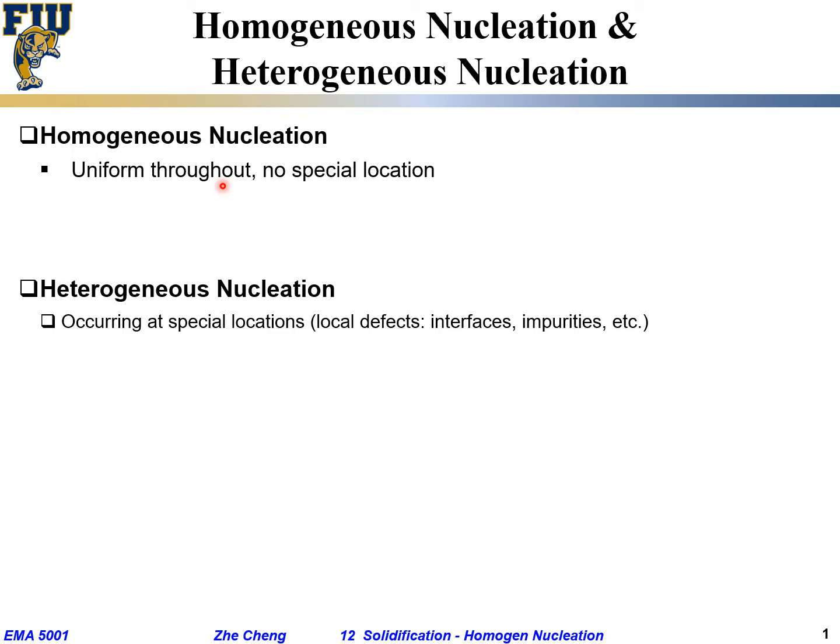Homogeneous nucleation, quite often in order for it to happen, you need large driving force. By large driving force here we are talking about in reality large undercooling, which means the liquid has to be much lower in temperature—the actual liquid temperature is much much lower than the melting point.